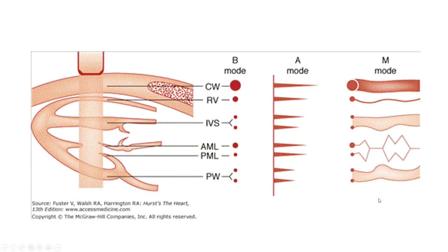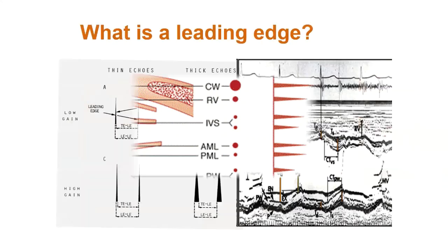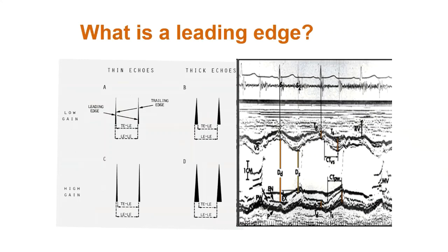There is an associated electrocardiogram generally at the bottom of the screen. In earlier days, there was also a channel used for the phonocardiogram, which is one reason why cardiologists who trained in the 1960s and 70s were very good at timing cardiac events — partly because they could associate these findings with the M-mode echocardiogram.